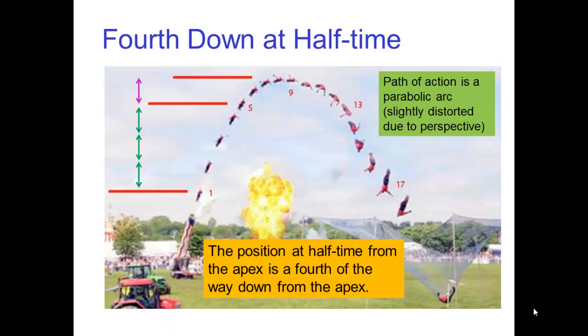You may also use fourth down at half-time for the timing and spacing of a parabolic arc. This rule says that the position at half-time from the apex is a fourth of the way down. In this example, key number nine is the apex and number five is at half-time between it and key number one. So we know that key number five is a fourth of the way down from the apex as you see in this photo.